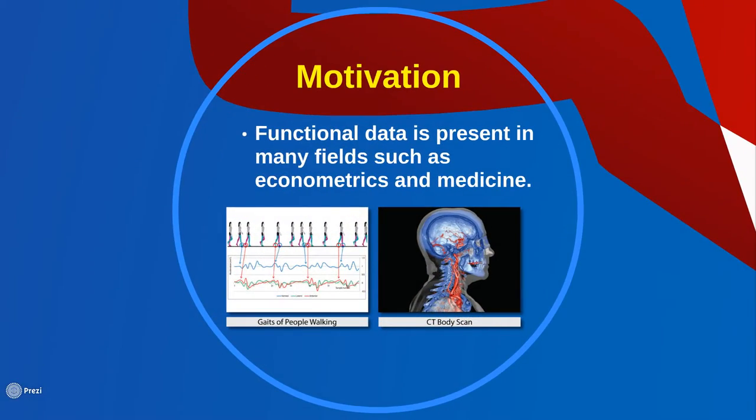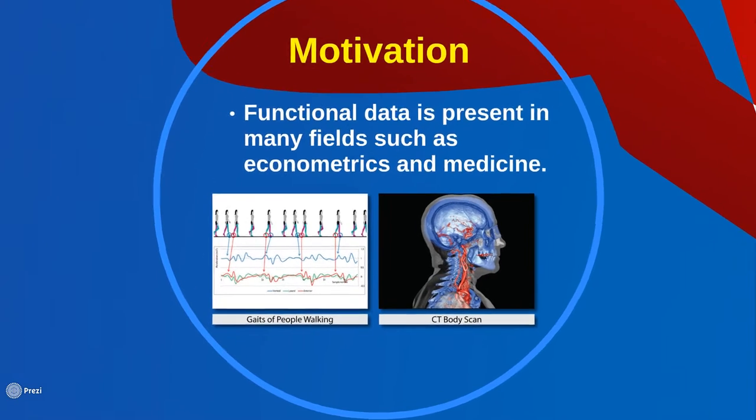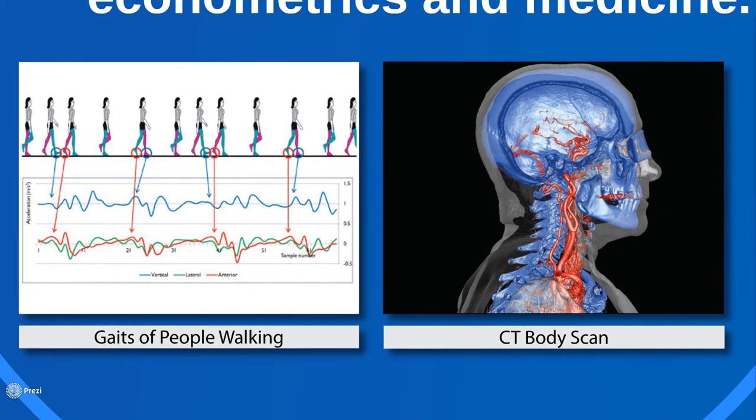The reason why we care about functional data is because it can be used to represent data in many different fields. Some specific examples of functional data are curves representing people's gaits, which is one-dimensional, or data from CT scans, which is three-dimensional.